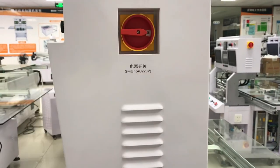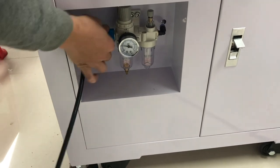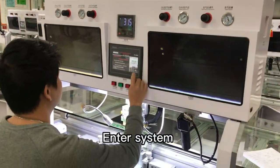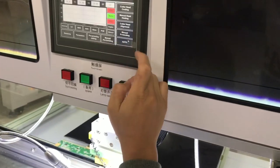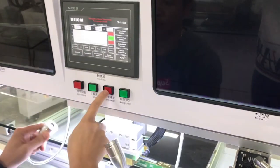Switch on the machine, switch on the air compressor, enter the system, and switch on the lamp.